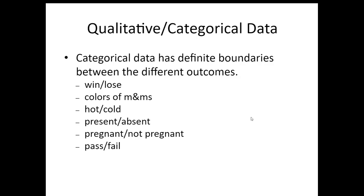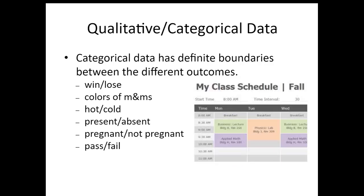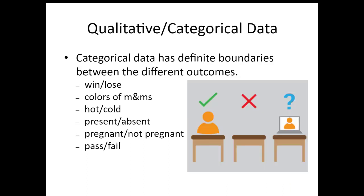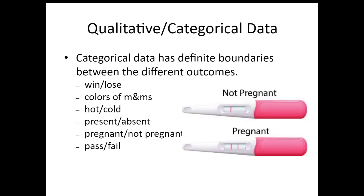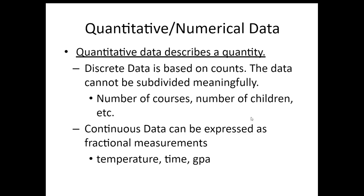I wanted to do a quick review. In the first part of the class we talked about the differences between qualitative data and quantitative data. Qualitative data can also be called categorical data, and it has definite boundaries between outcomes. It describes some characteristic — like games won versus games lost, colors of M&Ms, courses that you take, whether something is a hot or cold beverage, being present or absent.